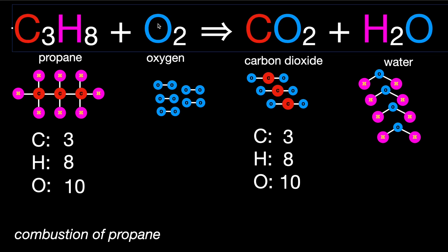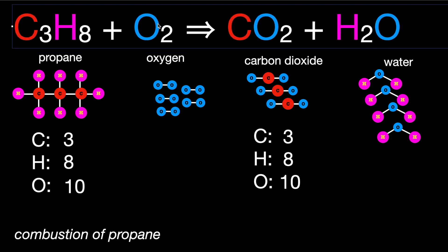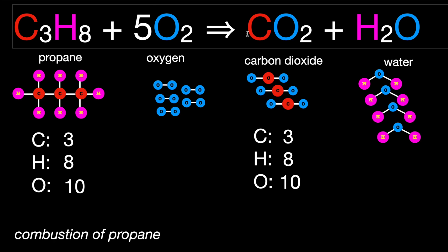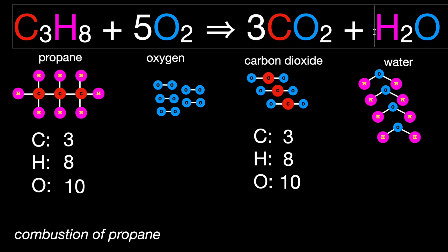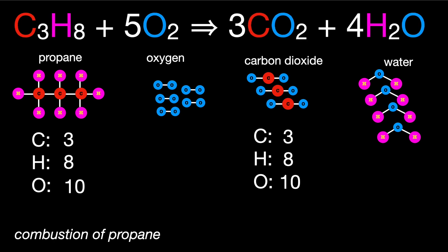So, looking at the whole equation, might need to make this smaller. We still only have 1 propane molecule, but now we have 5—we can count them here—5 oxygen molecules, 3 carbon dioxide, and 4 water. And now we have a balanced equation for the combustion of propane.